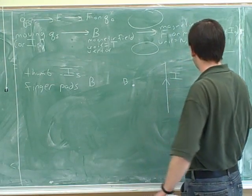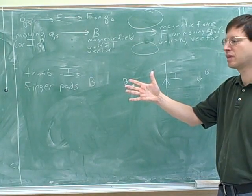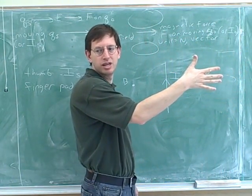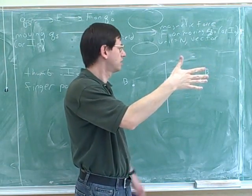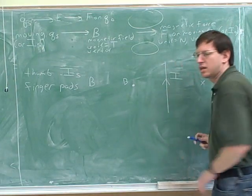How about the direction of the magnetic field over here? Thumb pointing up, fingers pointing to the right. Fingers positioned to the right of the thumb, good. And now finger pads are going into the board, right. So the symbol would be the X.